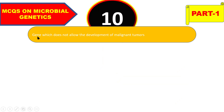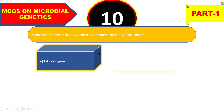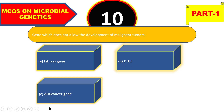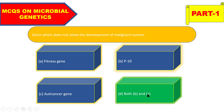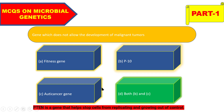The next question: which gene does not allow the development of malignant tumors — fitness gene, p10, anti-cancer gene, or both B and C? The right answer is both B and C. The two genes that restrict malignant tumors are p10 and anti-cancer gene. p10 is a gene that helps stop cells from replicating and growing out of control.